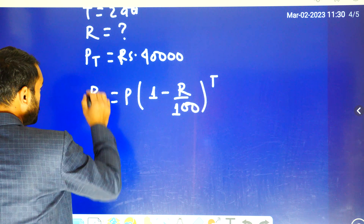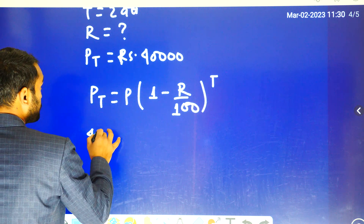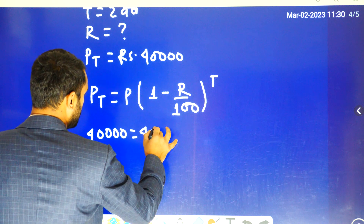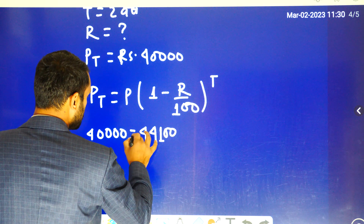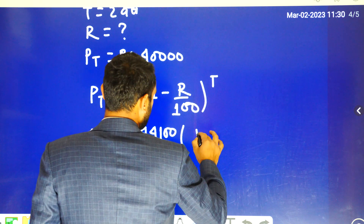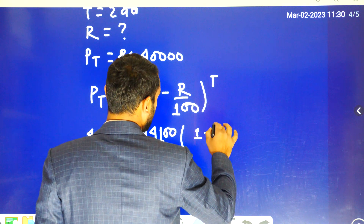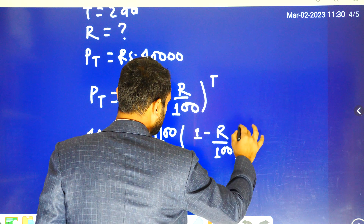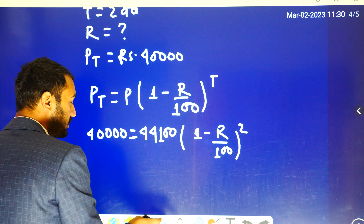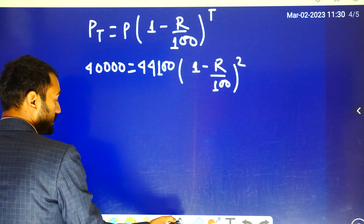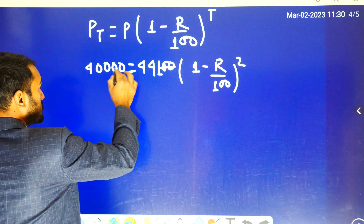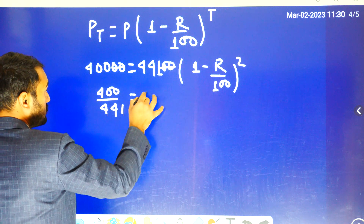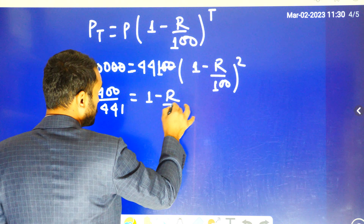So this is P and the depreciation is 1 minus R by t. So this is Pt which is 40,000 equal to 44,100. And this is 1 minus R by 100 which is squared, i.e. to the power 2.